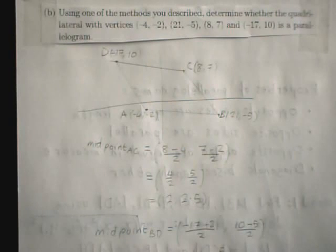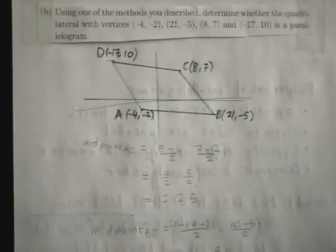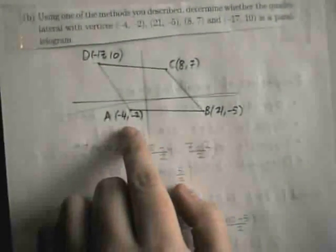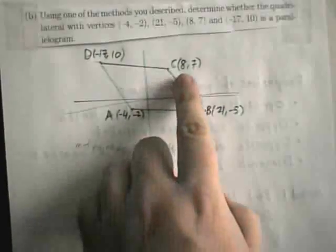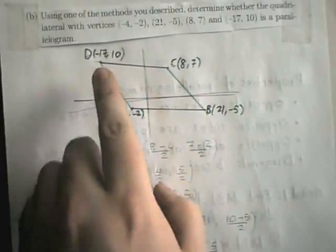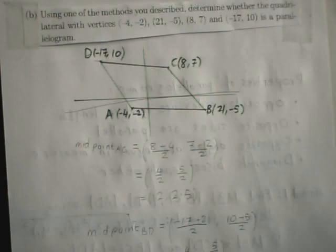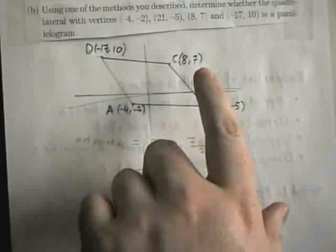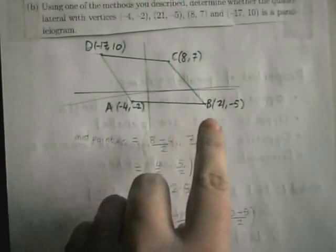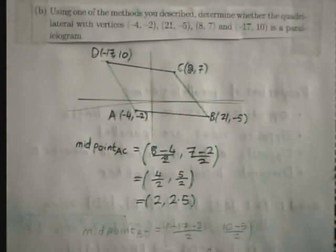Here's part B of the question — we have to use one of those methods on four given points to determine if they form a parallelogram. My hint here is to draw it out, just to make sure you know which points form which sides and which diagonals. I'm calling the bottom-left point A, then B, then C at coordinates 8, 7, and D at minus 17, 10. I do this to be sure I'm not mistakenly treating AC or BD as sides rather than diagonals. The method I decided to use was method 3 — finding the midpoint of the two diagonals.